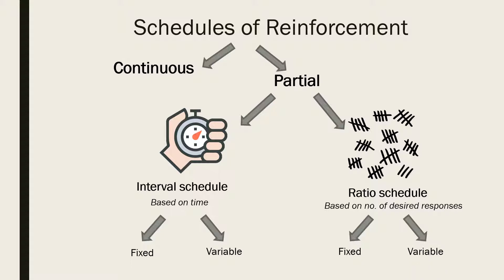Examples of variable ratio schedules include fishing and gambling. Like the fixed ratio schedule, the variable ratio schedule produces high rates of responding because reinforcers increase as the number of responses increase.